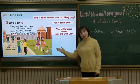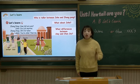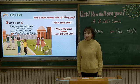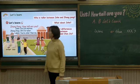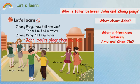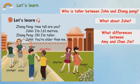Okay, boys and girls, let's read after the recorder. Pay attention — try to imitate the pronunciation and intonation. You need to be careful. Let's go! How tall are you? I'm 1.61 meters. Oh, I'm taller. You're older than me too. Younger. Older. Taller. Shorter. Longer. Excellent!